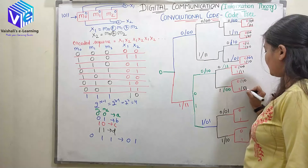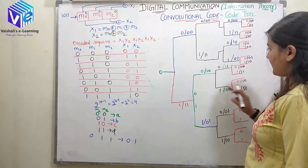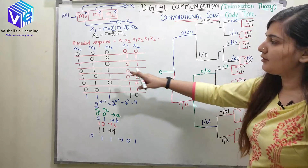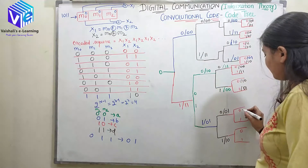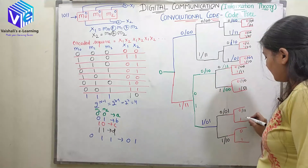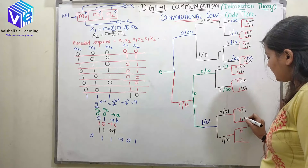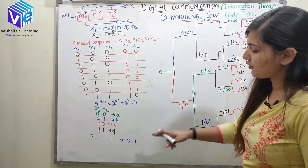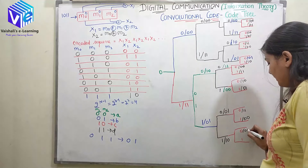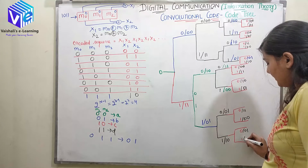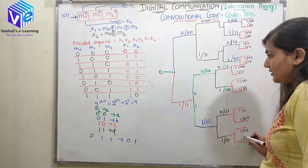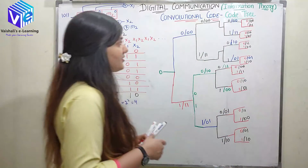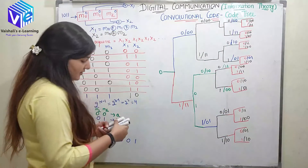For state 101 it is 00, for 110 it is 10. For 001 the output is 11, for 101 the output is 00, for 011 the output is 01, and for 111 the output is 10. This completes the generalized code tree.